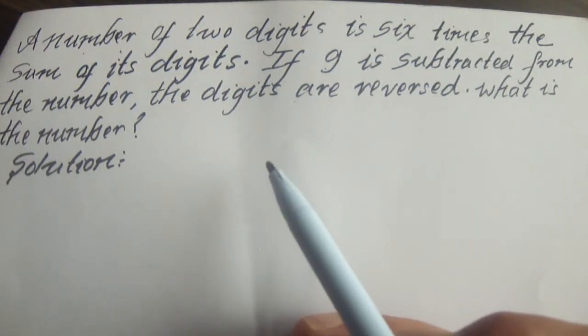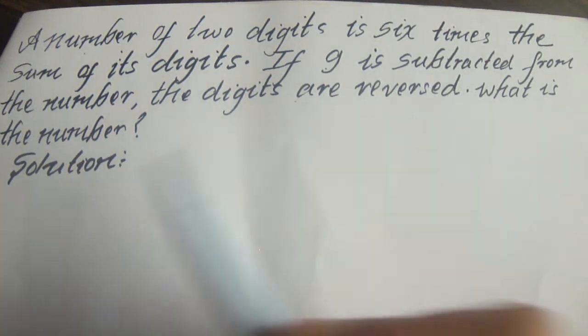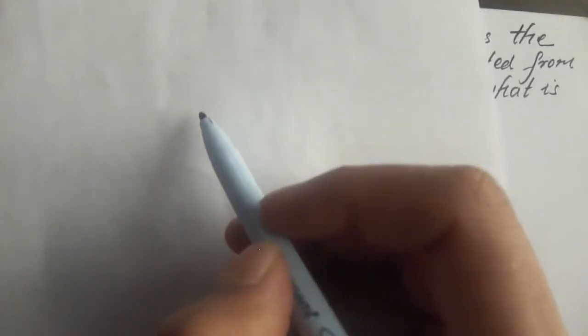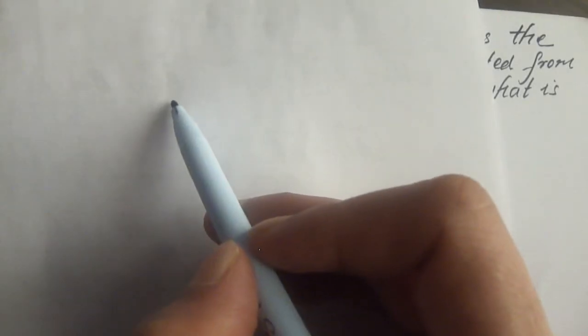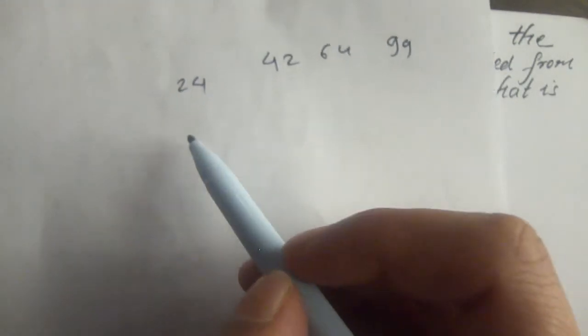First, some basic concepts. What is a two-digit number? Examples include 24, 42, 64, and 99. All of these are two-digit numbers.